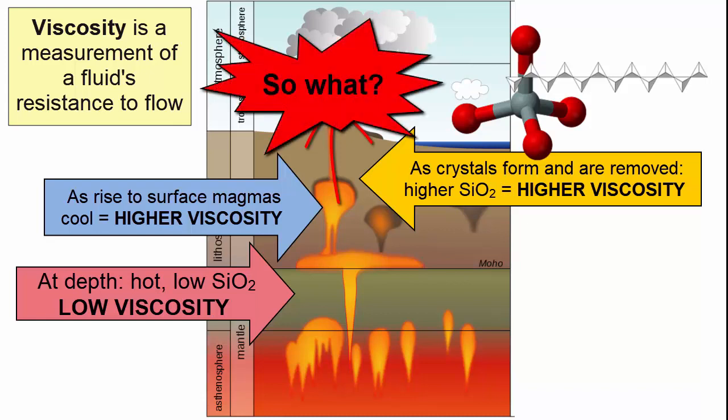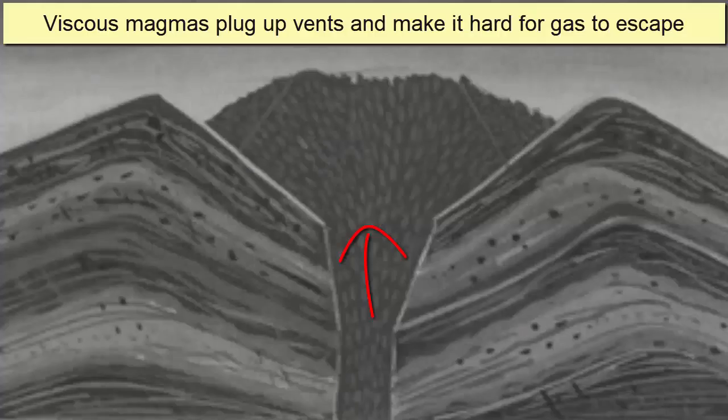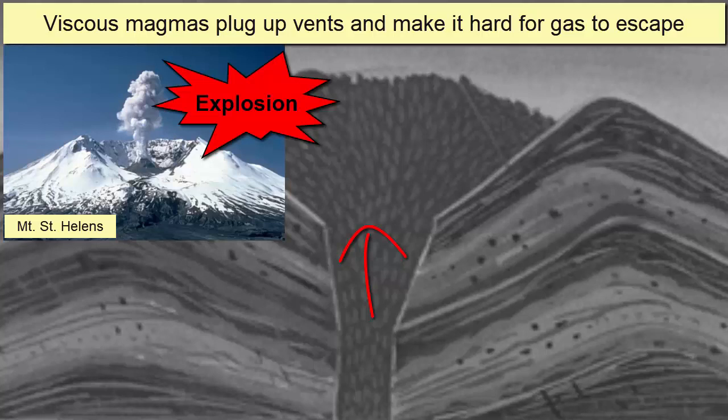So what? Magma viscosity impacts igneous rocks in a few ways. At the surface, when magma viscosity is high, magmas have a hard time migrating out of vents and can get stuck in them. In addition, gases have a hard time escaping from viscous magmas. Together, magmas rich in gas plugging up vents can allow pressure to build behind them, heightening the risk of explosive eruptions.